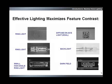In these additional examples, on the left we see the effect of improper lighting on three different parts, and on the right we see the effects of proper lighting. With proper lighting, the 2D data matrix, bulb filament, and engraving on metal can be clearly seen with high contrast.